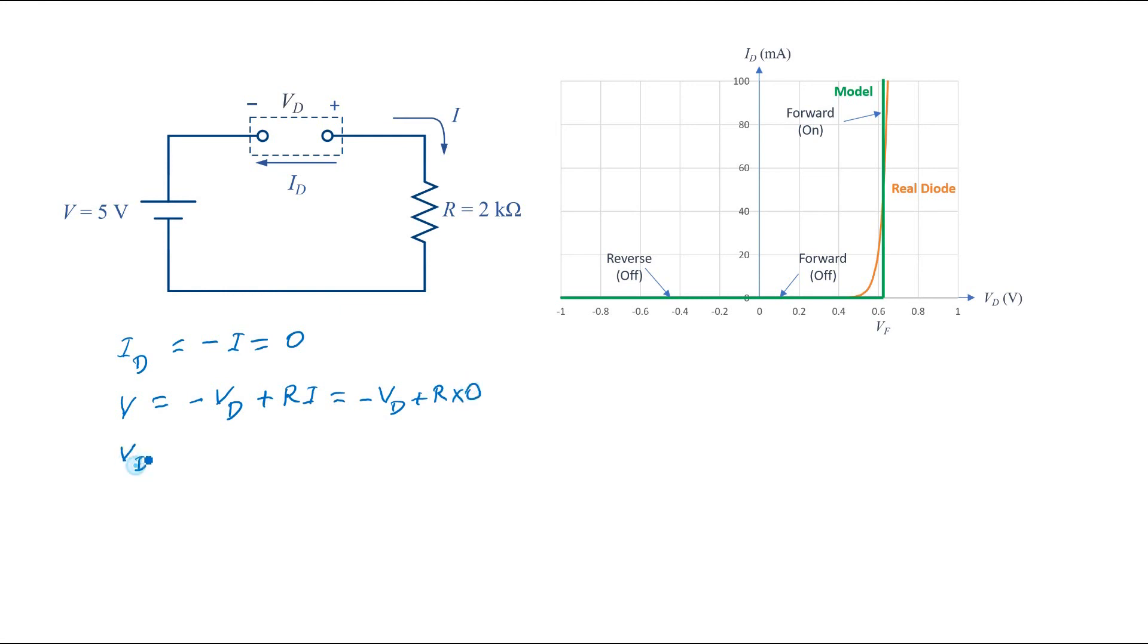So the diode voltage will be equal to the applied voltage and for these numerical values, it's equal to minus 5 volts.